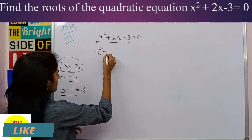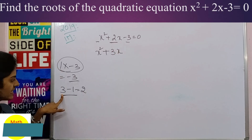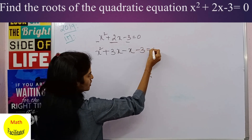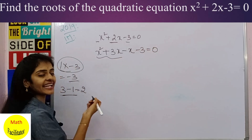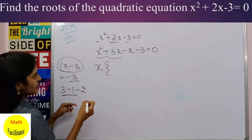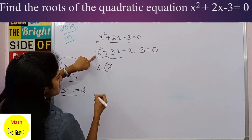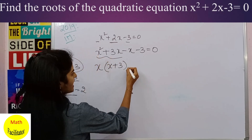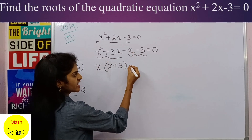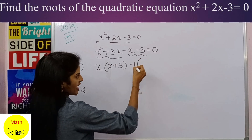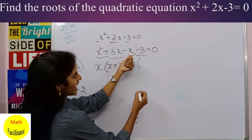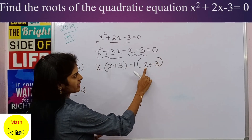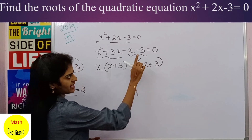So we write x² + 3x - x - 3 = 0. In the first two terms you can take x as common, giving x(x + 3). In the last two terms you take -1 as common, giving -1(x + 3). Check: -1 times x is -x, and -1 times 3 is -3.